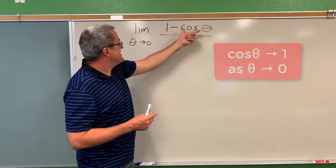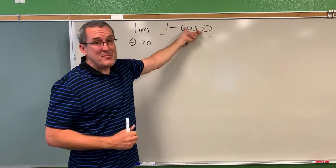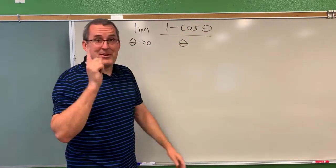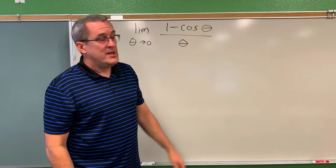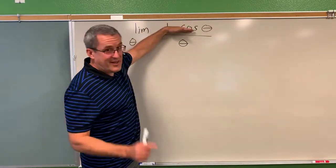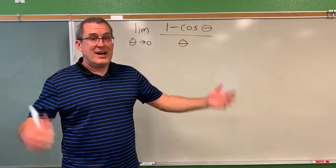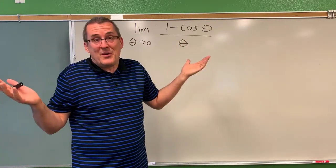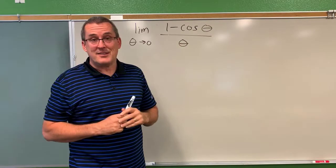One minus something nearby to one is going to be nearby to zero. And if theta is approaching zero, then the denominator is approaching zero. So we have this numerator that's getting close to zero, a denominator that's getting close to zero, zero over zero, the indeterminate form. We don't really know what's going on just from our mental analysis.